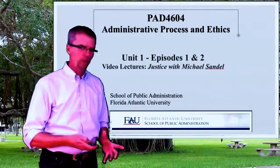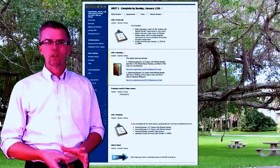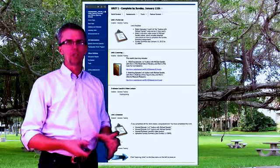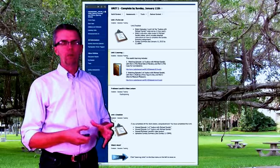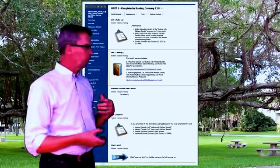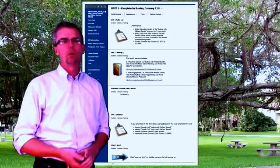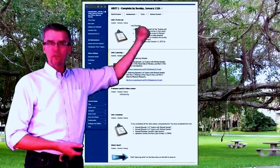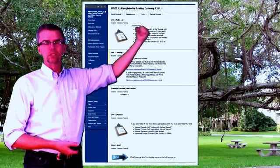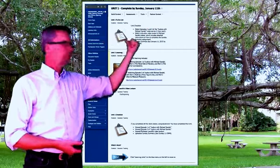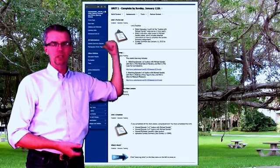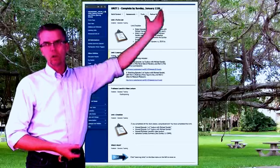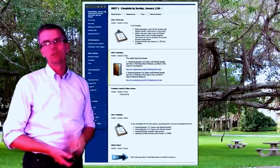Let's go through how this all works. First, before we cover the Michael Sandel episodes, I want to cover some formatting differences for this Blackboard class. As you enter Blackboard, you'll find the Start Here link on the left sidebar. Just below that is the Learning Units folder. When you click on Unit Number One, this is the page you'll find.